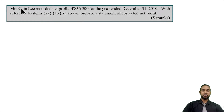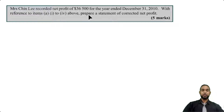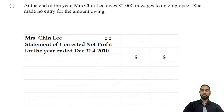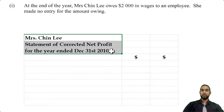Now let's take a look at part B. Mrs. Chinlee recorded a net profit of thirty-six thousand five hundred for the year ended December 31st 2010. With reference to items one to four, we are to prepare a statement of corrected net profit. Because of those mistakes she made, thirty-six thousand five hundred is not going to be the correct net profit. We're going to head up the statement properly and start with the net profit before the correction.